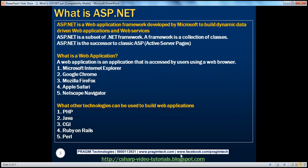So what's a web application? A web application is an application that is accessed by users using a web browser. For example, to search something on the internet, I fire up a browser and type in google.com — google.com is a web application. Or I want to do some internet banking, I fire up a browser and type in barclays.co.uk — Barclays is a web application. Any application typically accessed using a web browser is called a web application. Examples of browsers include Internet Explorer from Microsoft, Chrome from Google, Firefox from Mozilla, Safari from Apple, and Navigator from Netscape.